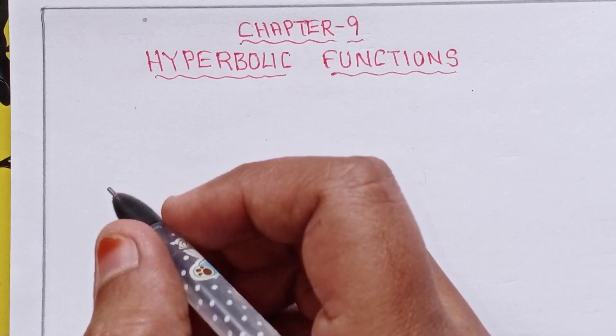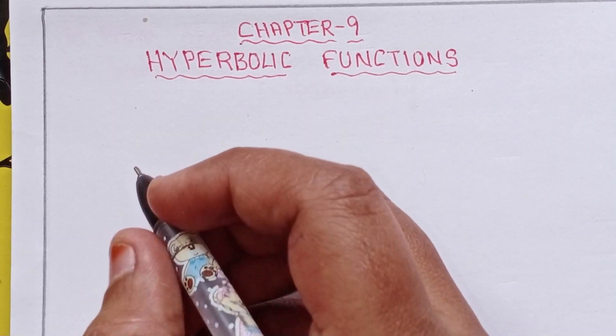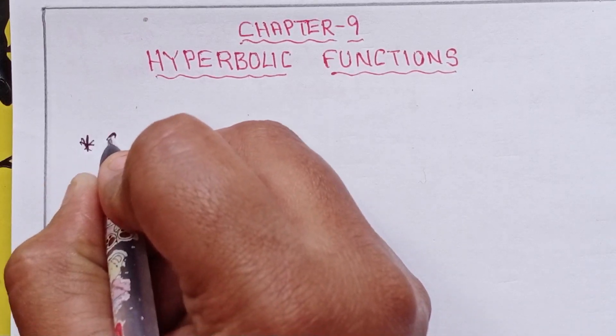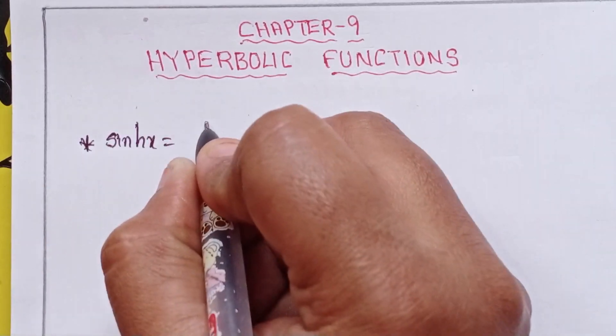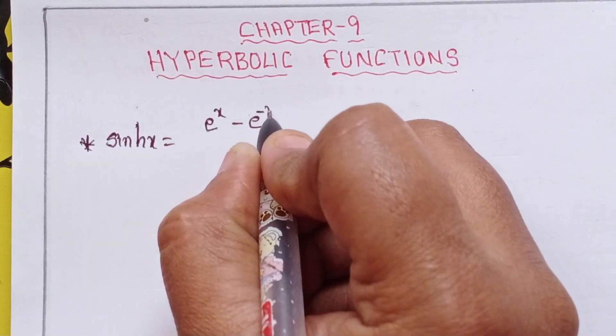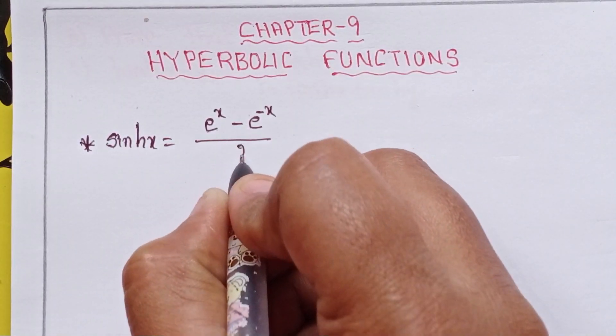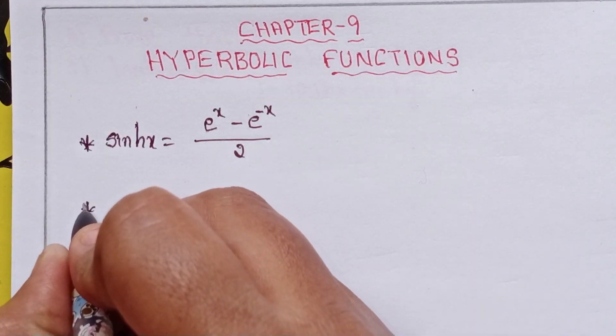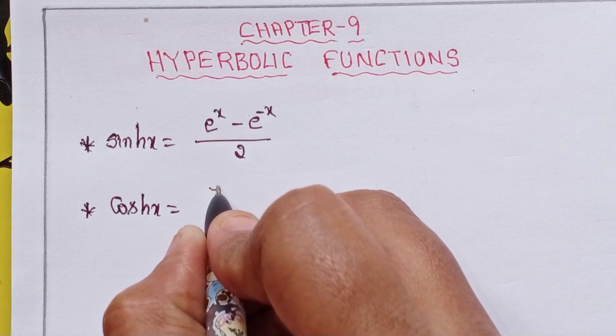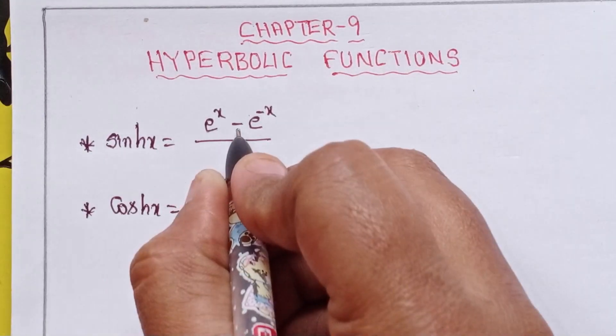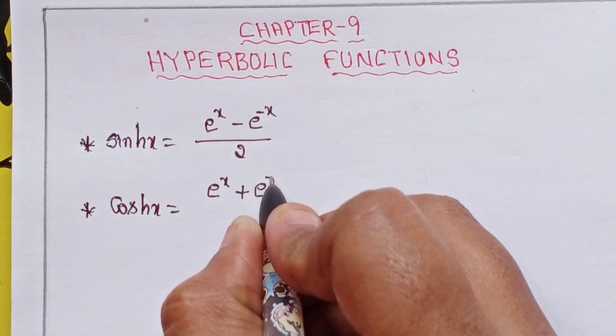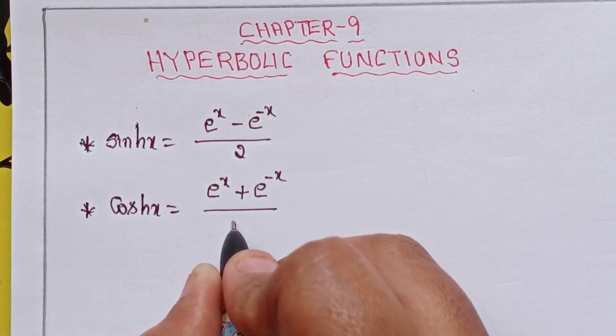First of all, some formulas you need to remember. First one: sinh x equals e to the power of x minus e to the power of minus x, divided by 2. And cosh x equals e to the power of x, here plus e to the power of minus x, divided by 2.